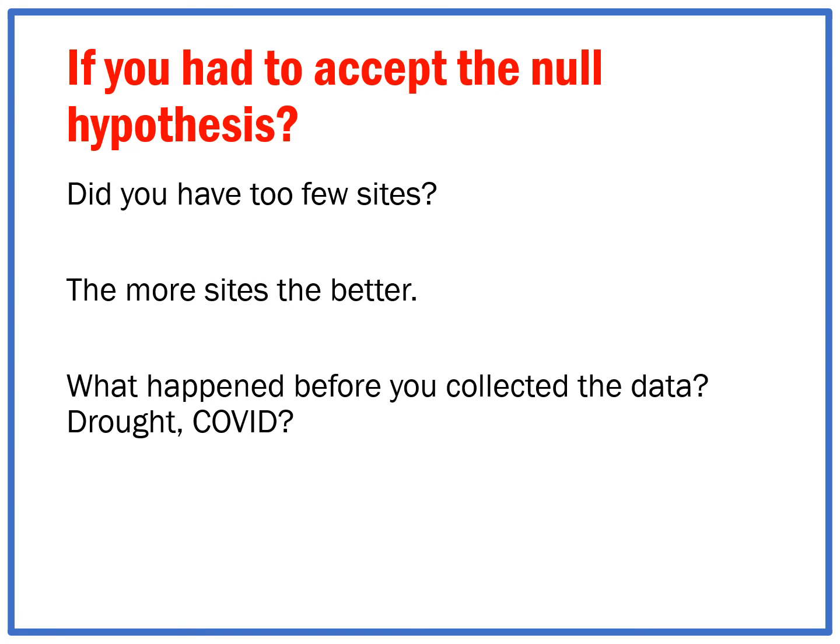If I had to accept the null hypothesis, it probably meant I had too few sites, because the more sites you have, the better — it overcomes one or two anomalous sites. It also gets me thinking about what happened before I collected the data. Was there a drought or a period of low rainfall affecting the amount of water in the river? For a human investigation, did something like COVID mean there were no people in town, giving sparse data? Or has something been built that influenced the river, like a bottling plant? These are all things to consider if you have to accept the null hypothesis.